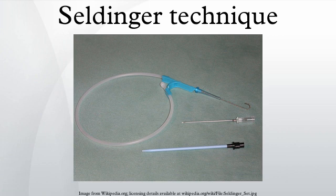Prior to the description of the Seldinger technique, sharp trocars were used to create lumens through which devices could be passed, and this had a high rate of complications. However, with the introduction of the Seldinger technique, angiography became a relatively risk-free procedure and the field of interventional radiology blossomed. Building on the work of Seldinger, Charles Dotter and Andreas Gruentzig developed angioplasty.